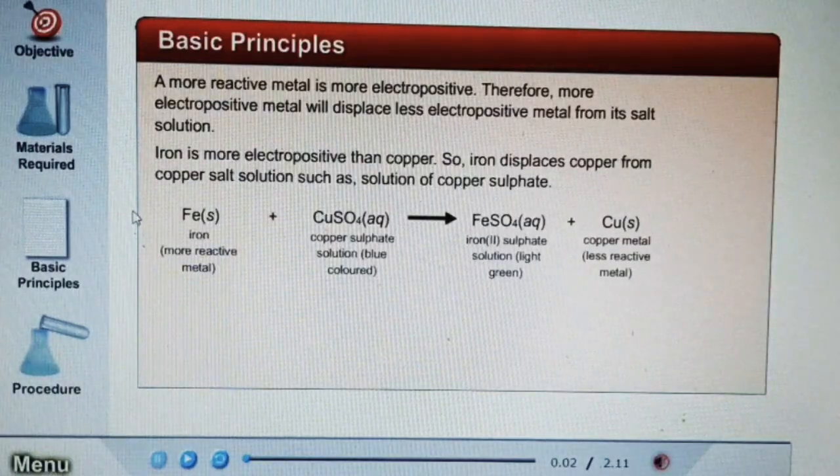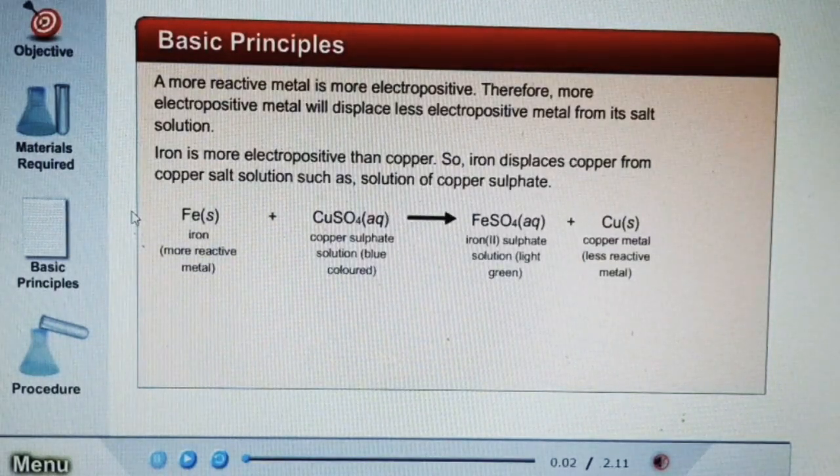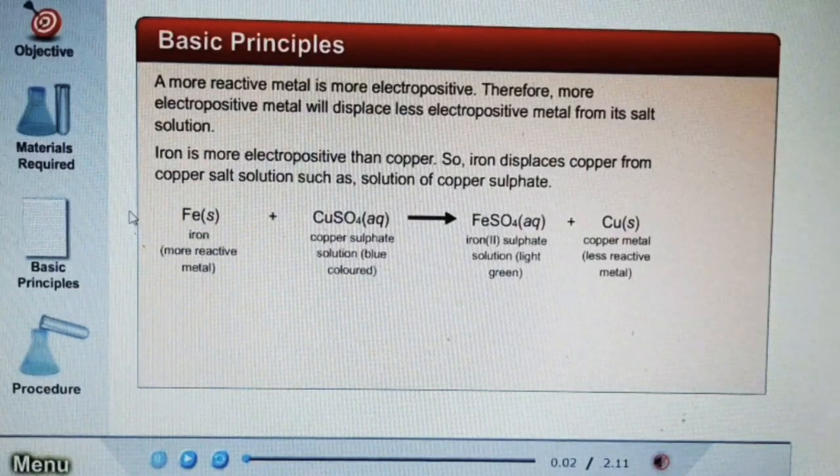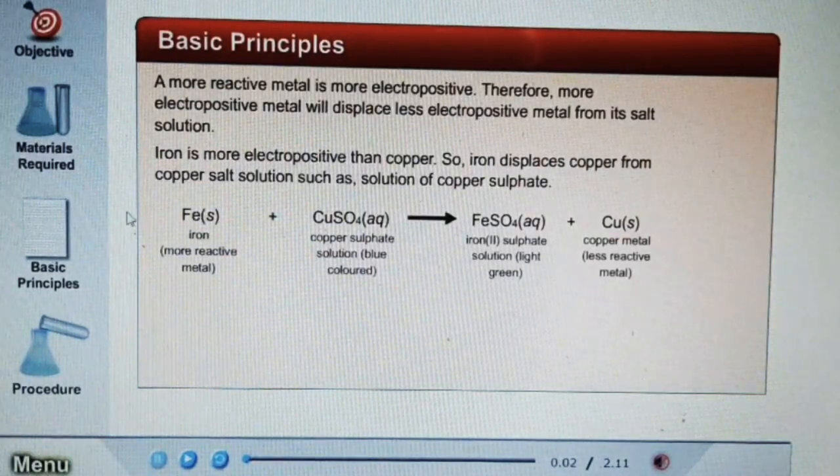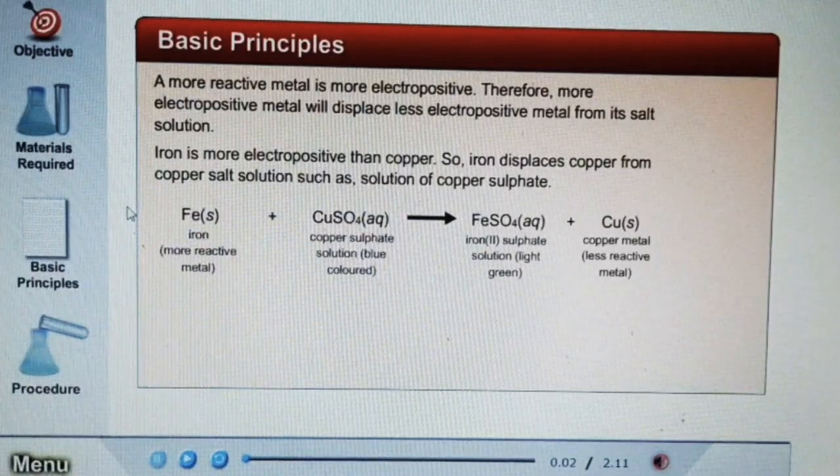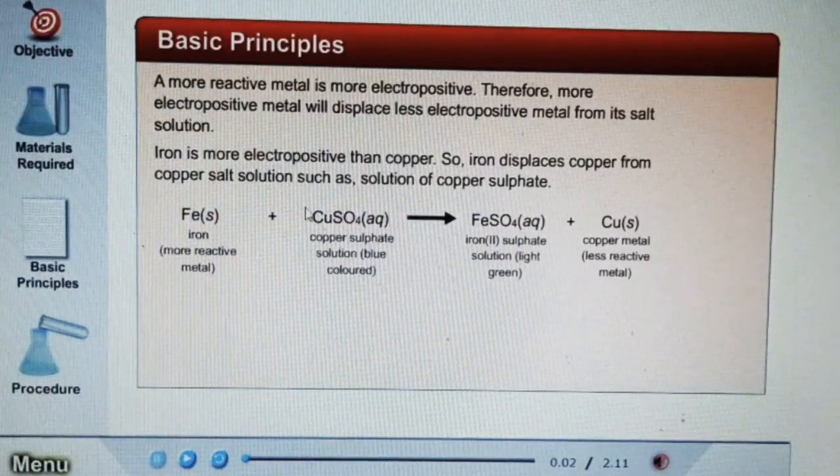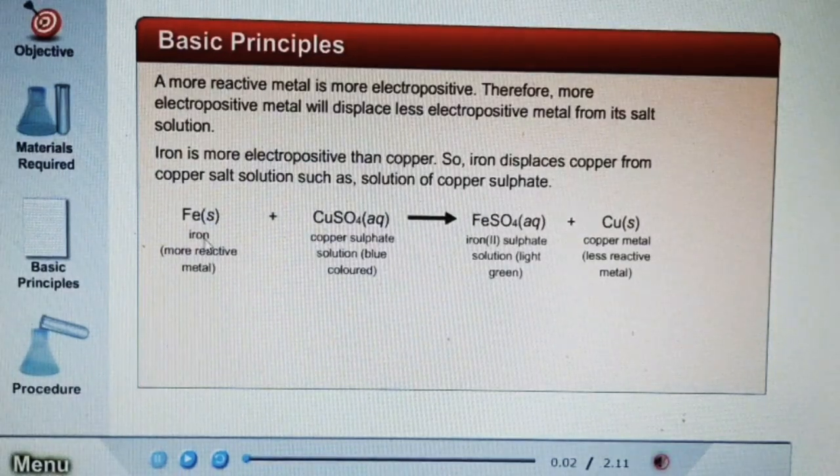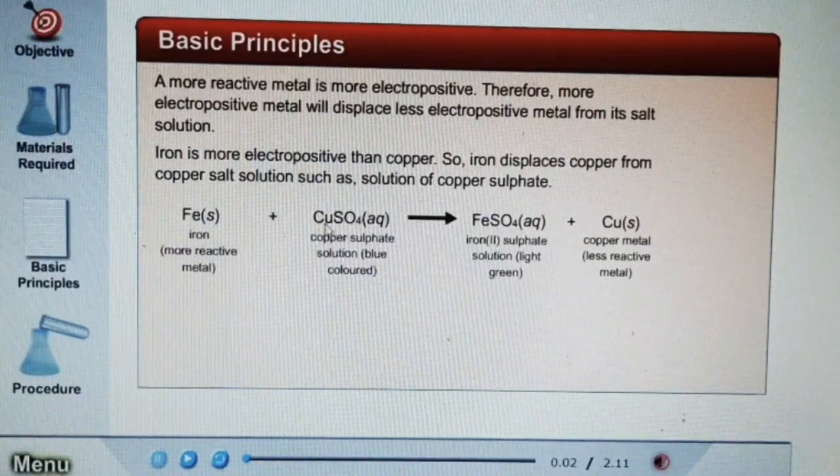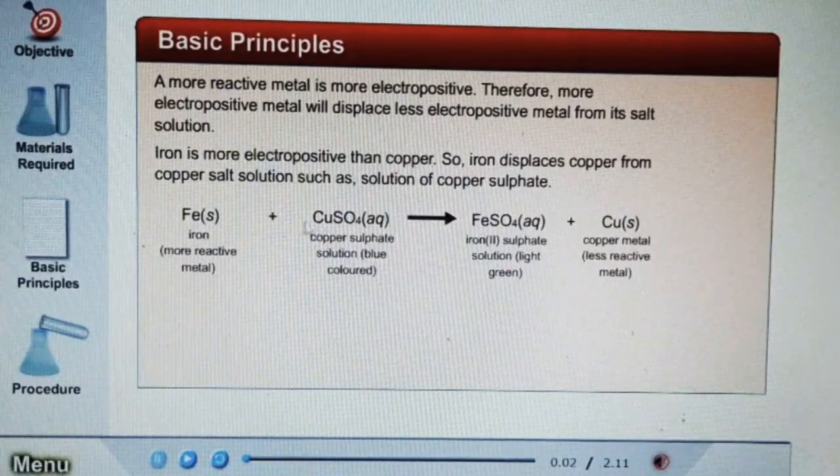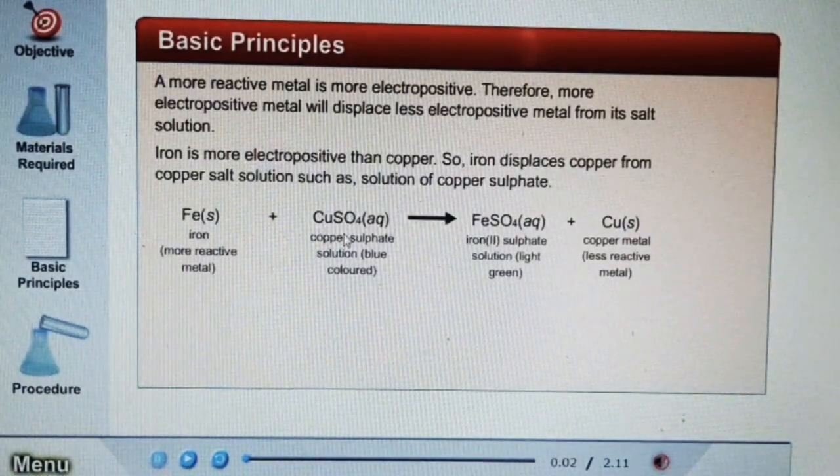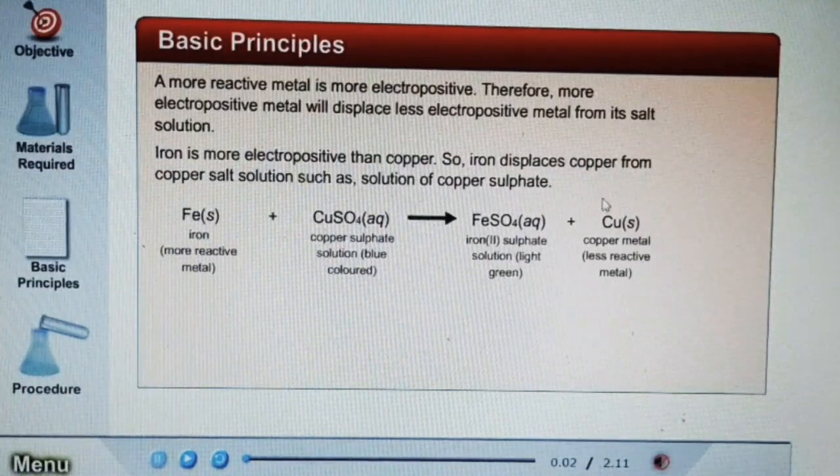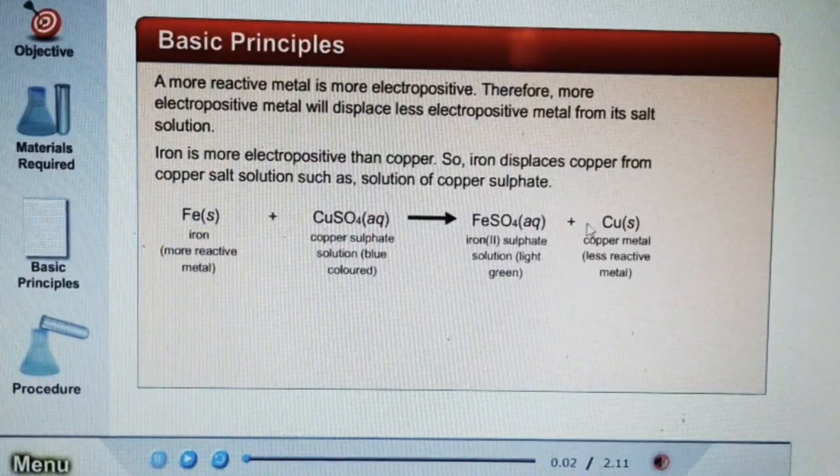Now the basic principle is a more electropositive metal will displace the less electropositive metal. This we have also learned in the theory. When iron reacts with copper sulfate solution, iron being more reactive will displace the copper from copper sulfate solution and we will get iron sulfate solution and copper metal will get displaced.